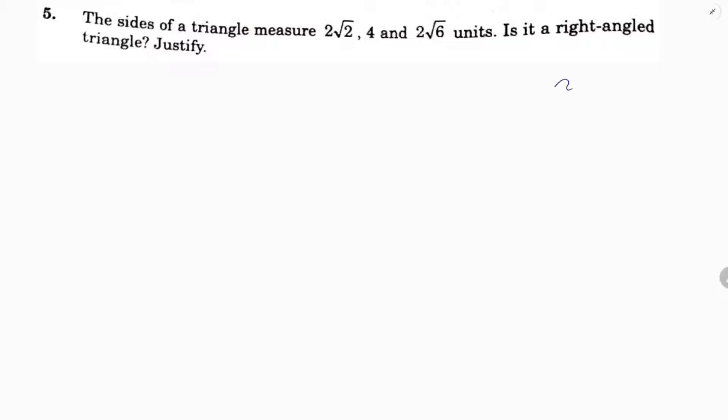To check for right angle triangle, we need to apply Pythagorean theorem. In a right angle triangle, the square of hypotenuse is equal to sum of the squares of other two sides.